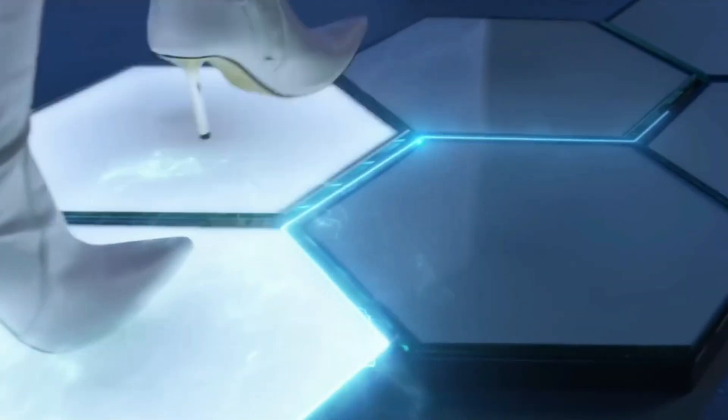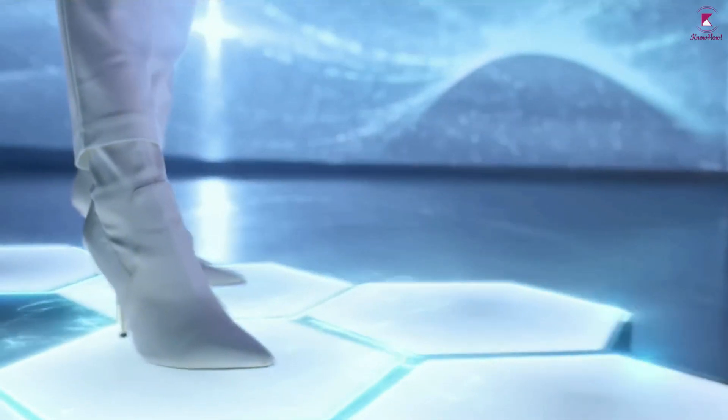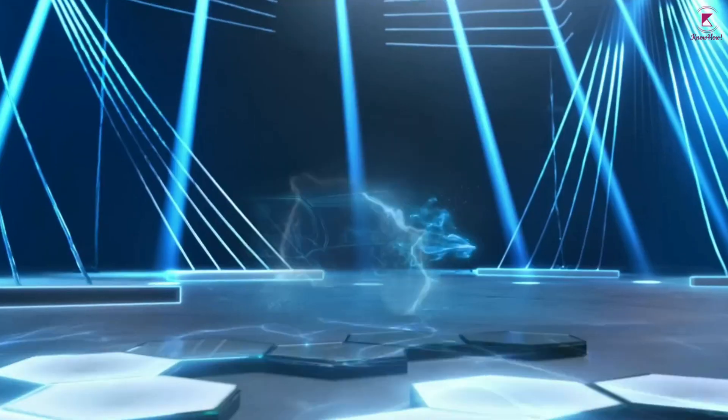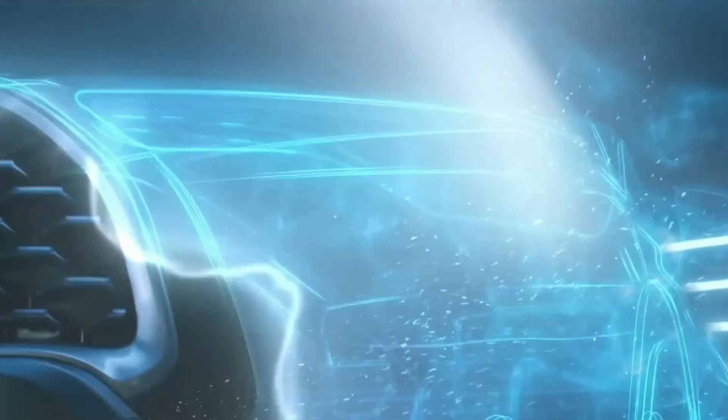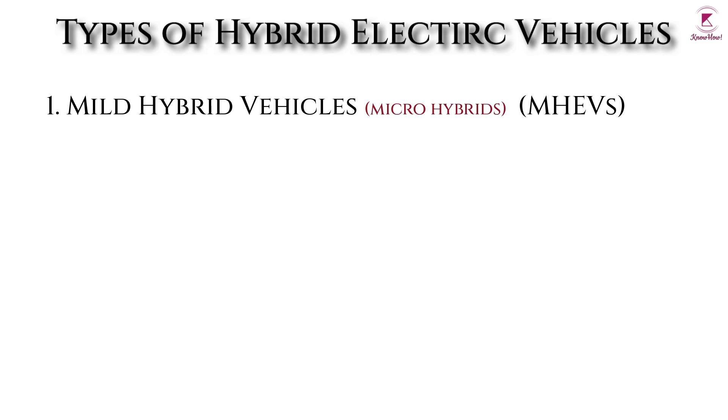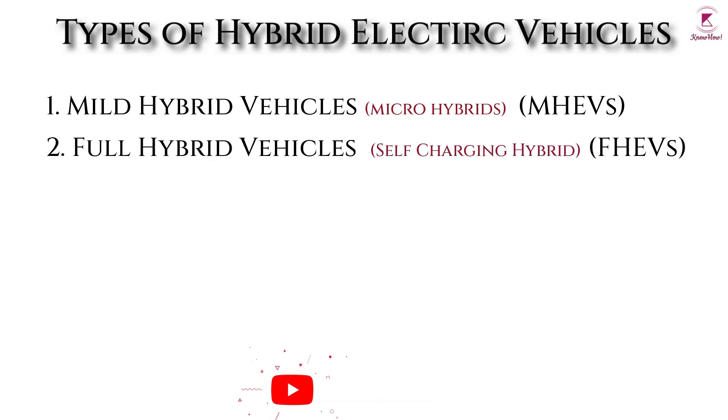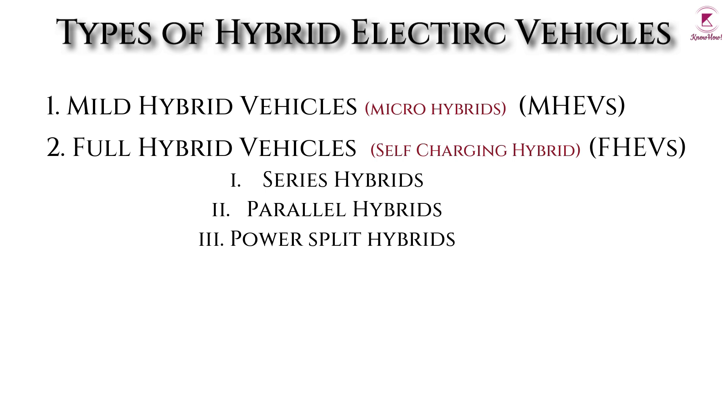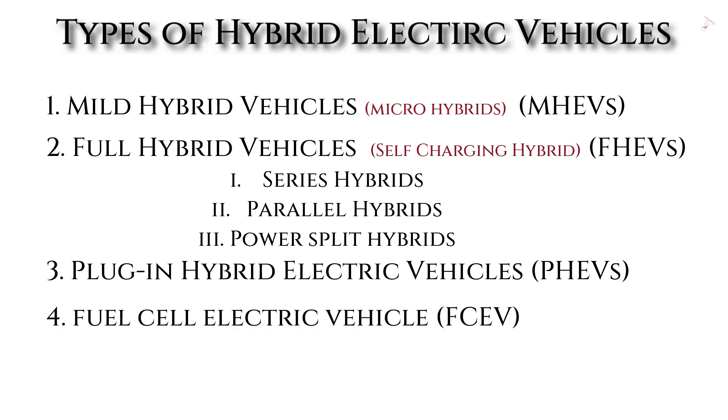Now that you know what a hybrid car means, it is time to understand the hybrid car types available in the market. There are three main types of hybrid cars, each with advantages and disadvantages. Mild hybrid vehicles, also called micro hybrids; full hybrid vehicles, or self-charging hybrid, which have types including series mode, parallel mode, or power split hybrids; plug-in hybrid electric vehicles; and the fourth one may be considered as fuel cell electric vehicle.